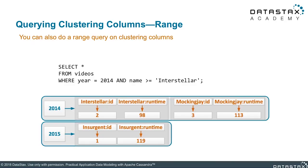In the case where you want to do a range query, you have year 2014 as your partition, but name is greater than or equal to something. Since we're using a UTF-8 sorting order, that means lexically greater than. Interstellar being before Mockingjay means you will see Interstellar and any record after the letter I. This can be useful especially in something like a time series data model, where you want to go to a certain time and then traverse all the other times after it.